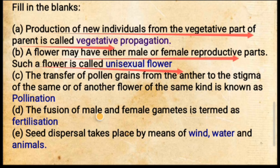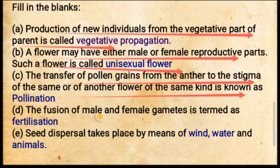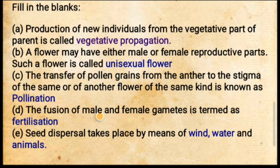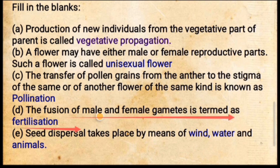The next blank: the transfer of pollen grains from the anther to the stigma of the same or another flower of the same kind. You can write pollination, but if you read the definition carefully it refers to the same flower, so self-pollination is the correct answer. Option D: the fusion of male and female gametes is termed as dash — the answer is fertilization. Note that the word 'unite' may also be used instead of 'fuse.' When transfer happens it is pollination; when they unite it is fertilization.